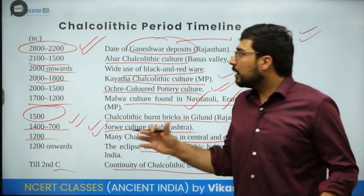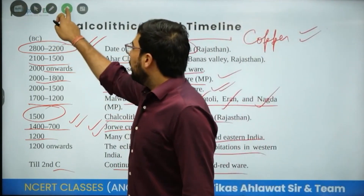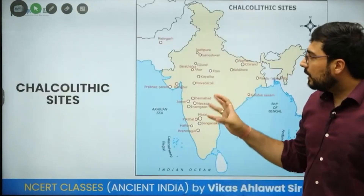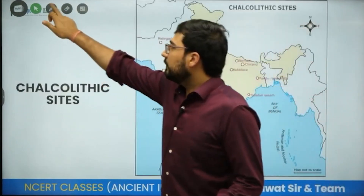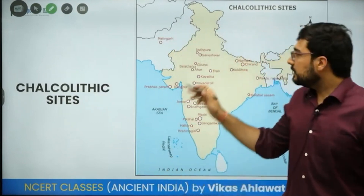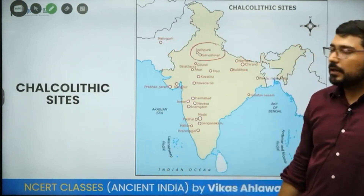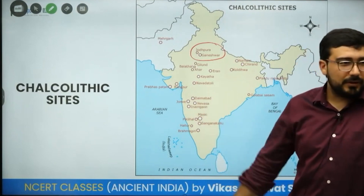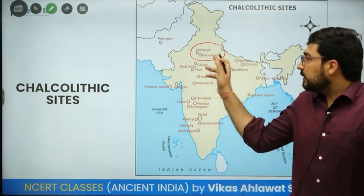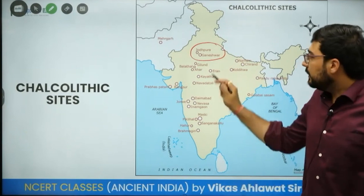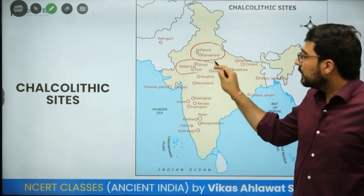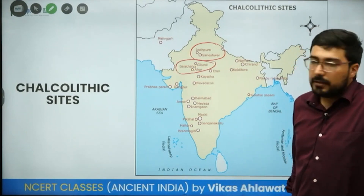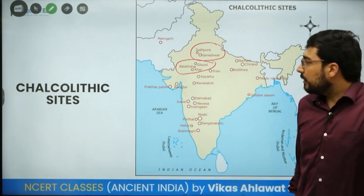When we talk about the Chalcolithic period, there were a large number of cultures, and we should have a basic idea about each. The Ganeshwar culture covers the area of Ganeshwar and Jodhpura — note that Jodhpura is not the same as Jodhpur, though the names sound similar. The Ahar culture has key sites at Gilund, Ahar, and Balathal.